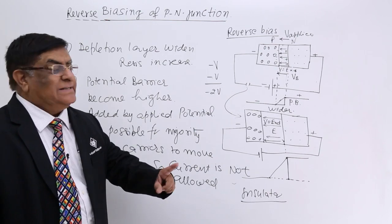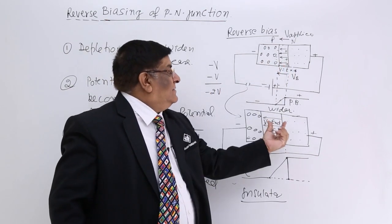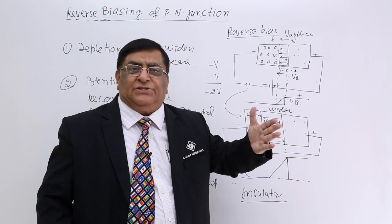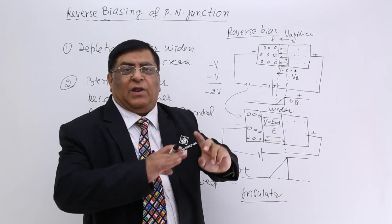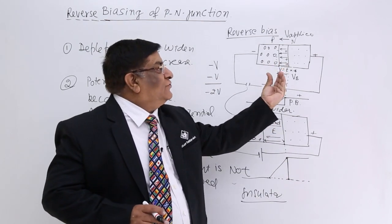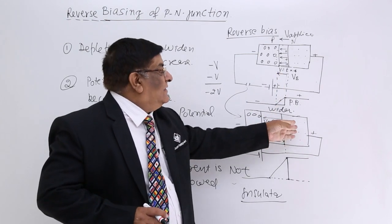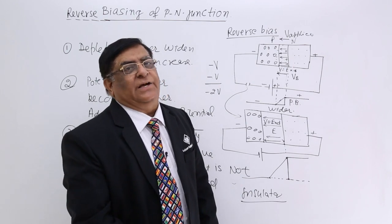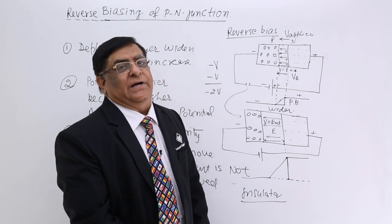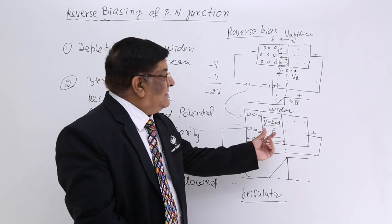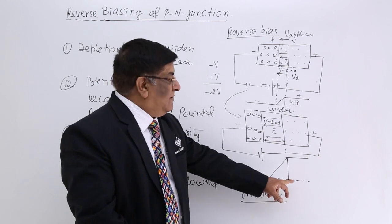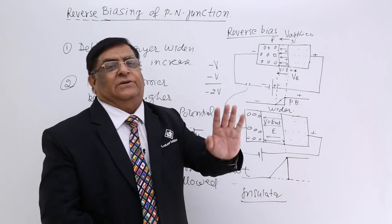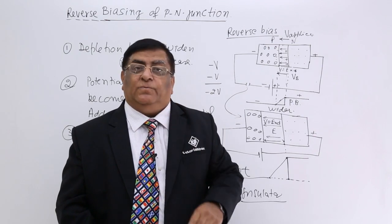In forward bias, the potential barrier was cancelled out, it had become equal, the depletion layer had shrunk to zero and there was fast movement of electric charges — it had become a conductor. In reverse bias, the barrier has increased and it has become an insulator. It will not allow current to flow.